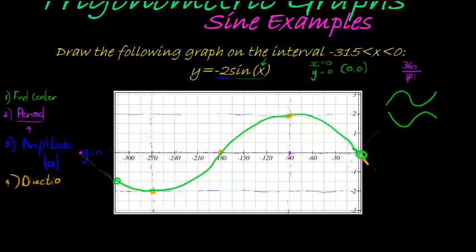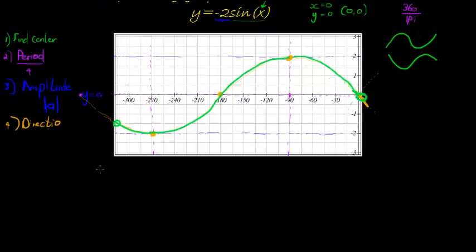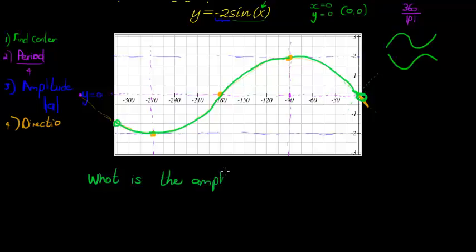Now, they might ask me, what is the amplitude? And if they do ask me what is the amplitude, it's actually asking me how high does it go above the center line? In this case, it is 2. The amplitude is 2. They might also ask me, what is the period?